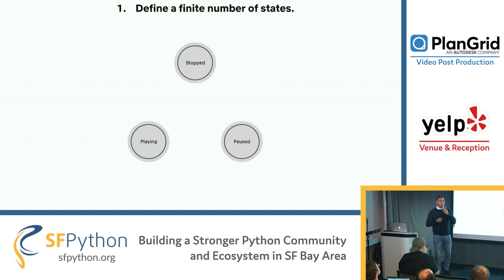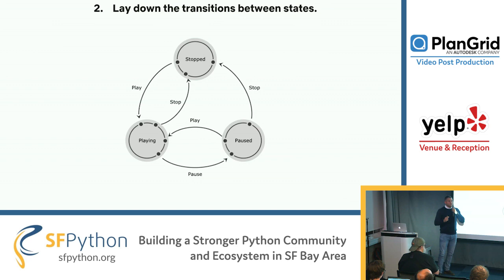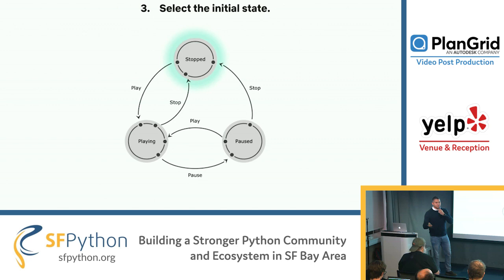Step number one — define a finite number of states. In the case of the video, we have playing, paused, and stopped. Step number two — lay down the transitions. A video can only be played when it's stopped or paused, so there are two incoming arrows to the playing state. Rule two: a video can only be paused when it's playing, so one incoming arrow to pause from playing. Rule three: a video can only be stopped when it's playing or paused — two incoming arrows to stopped. Finally, we select the initial state: stopped, because the video is not playing once we create the instance.